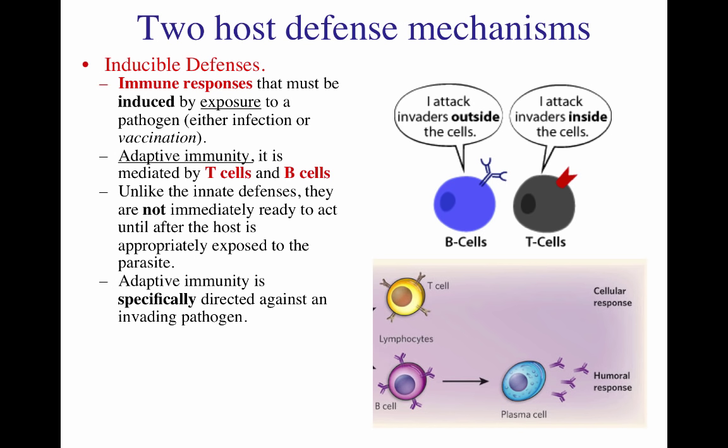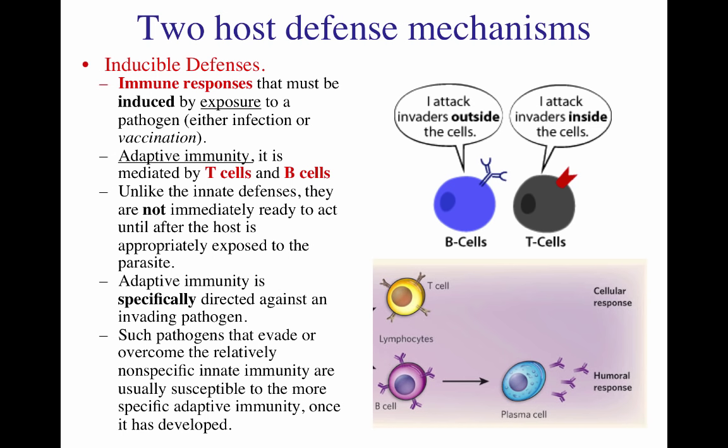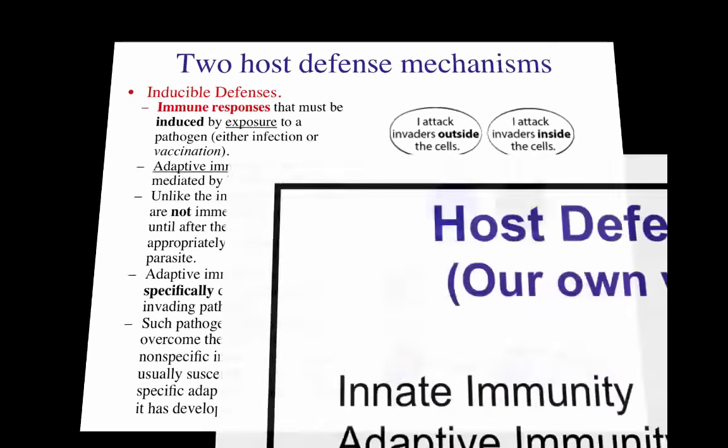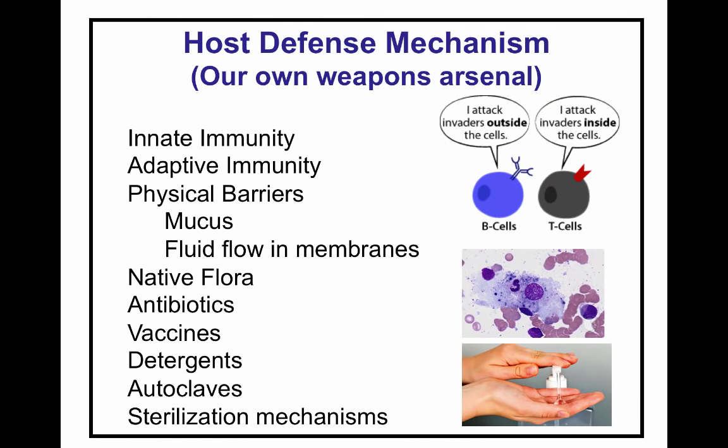Our entire B cell reservoir is a combination of all the memory B cells we've accumulated since childhood through vaccination and natural exposure. Pathogens, however, have mechanisms to evade the adaptive immune system. For example, some coat themselves with fibronectin — a host protein the immune system recognizes as 'self' — so the immune system doesn't attack them. Pathogens have many such mechanisms to prevent both the adaptive and innate immune systems from destroying them.